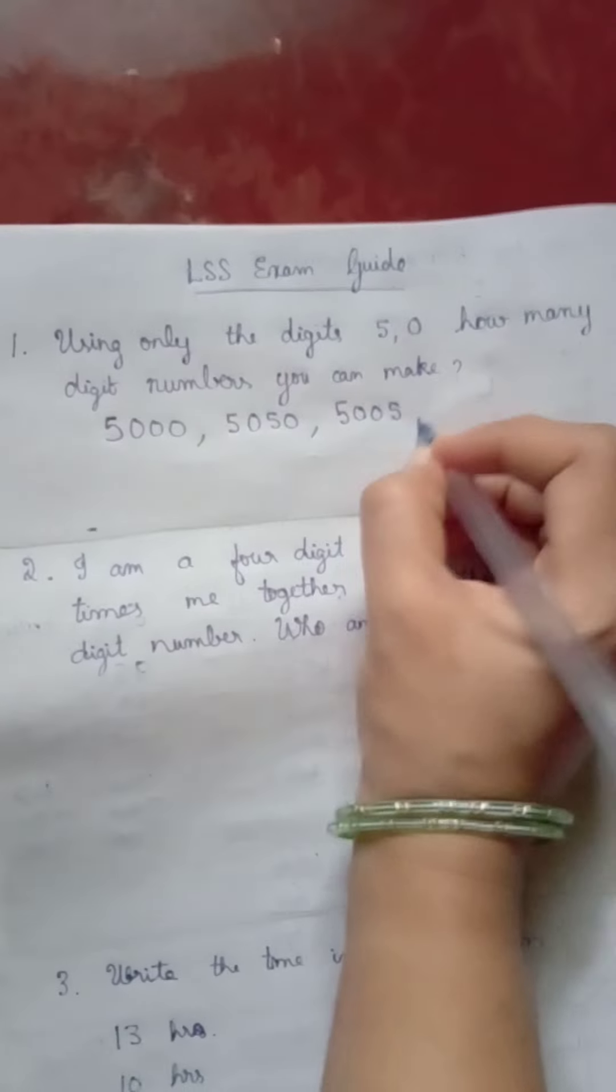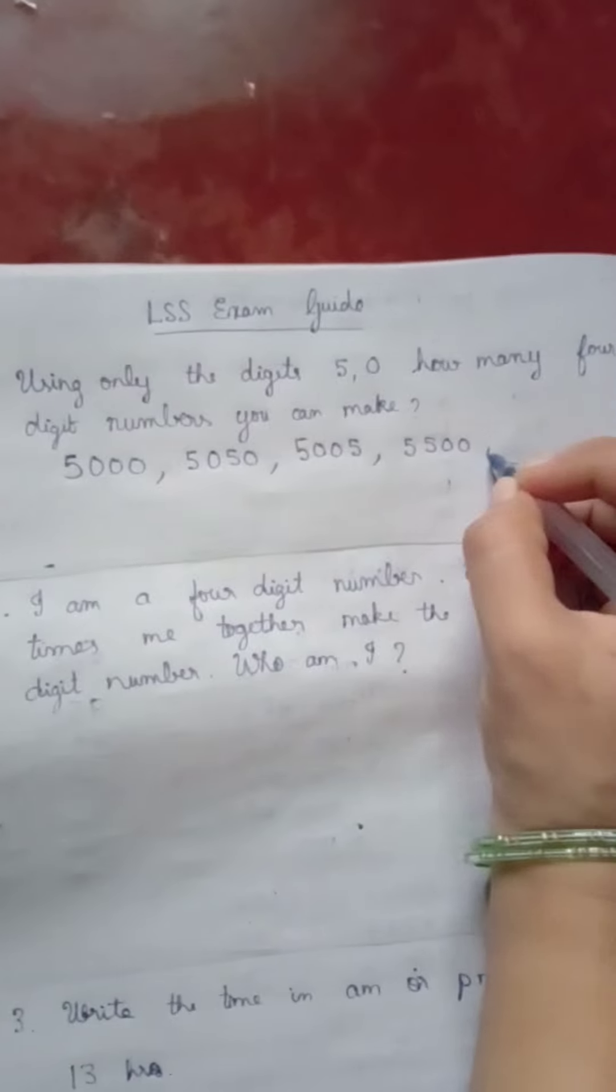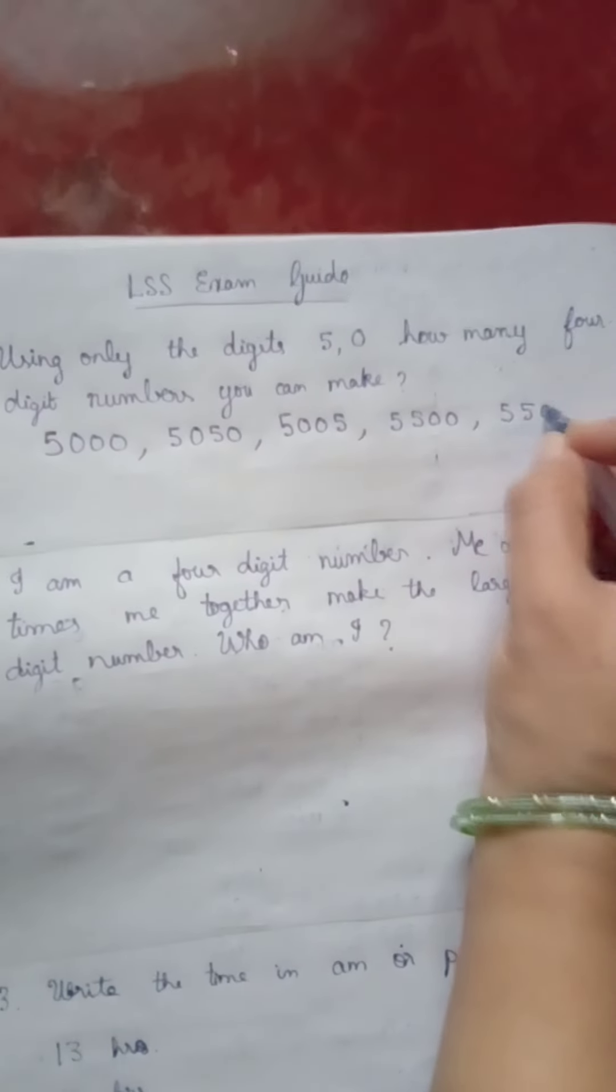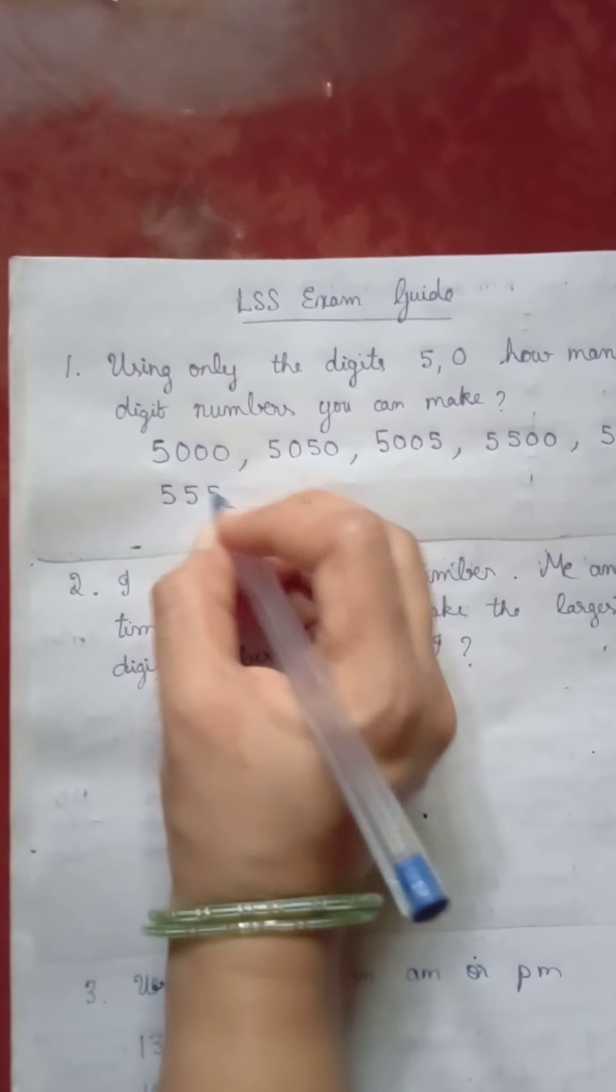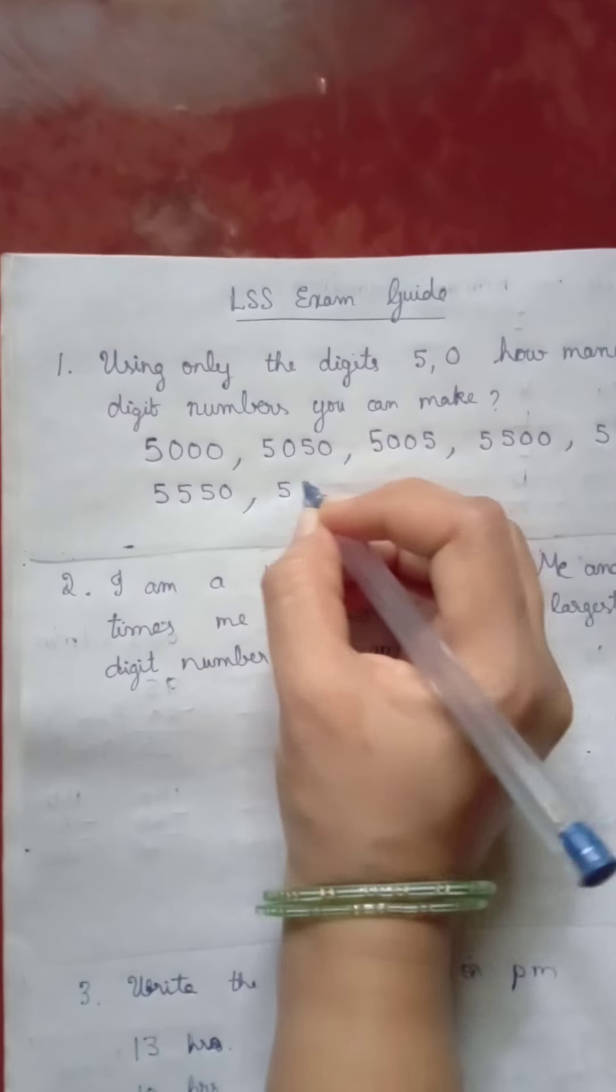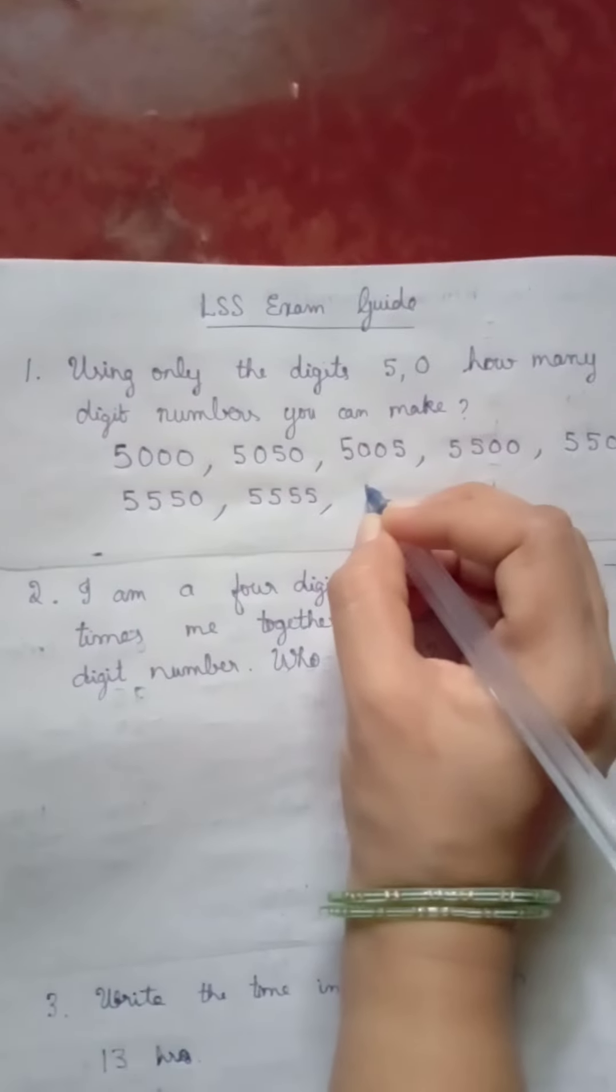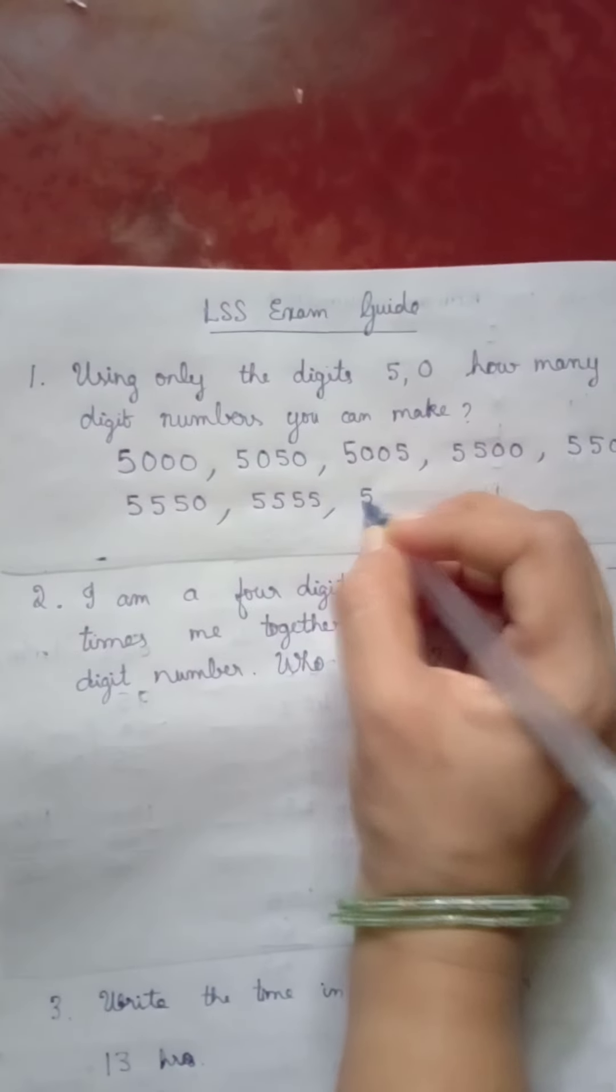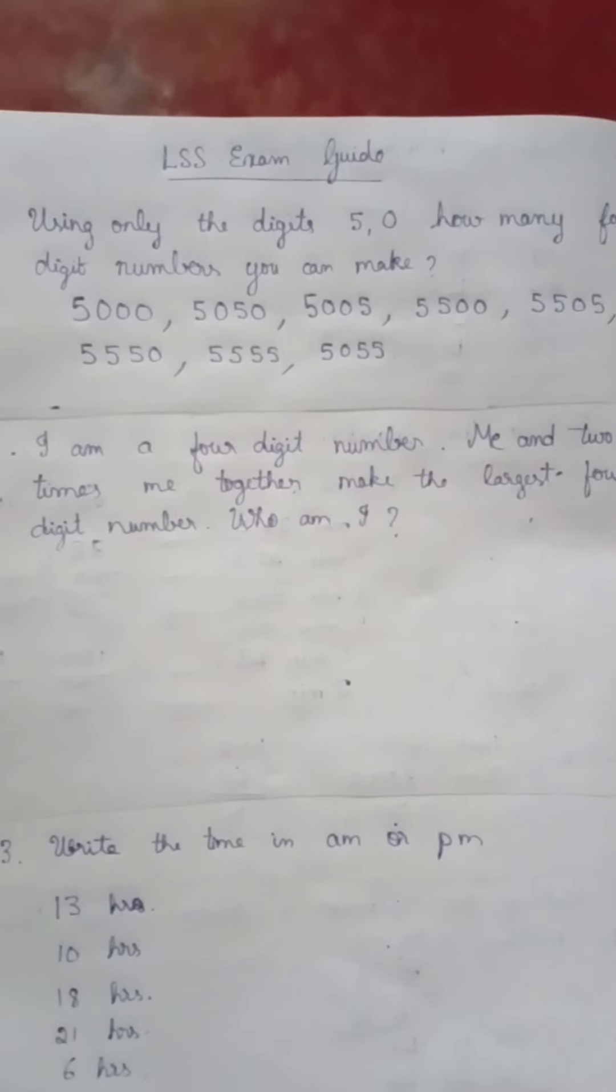5055, 5500, 5505, 5550, 5555. So we can make eight four digit numbers using numbers 5 and 0.